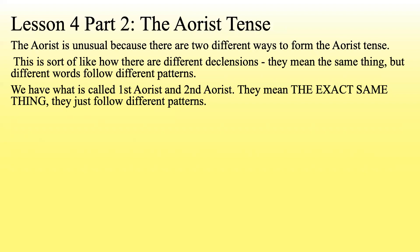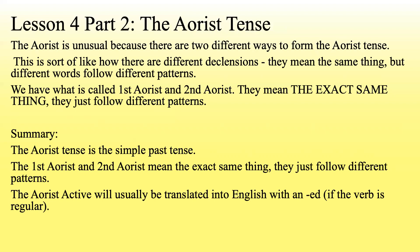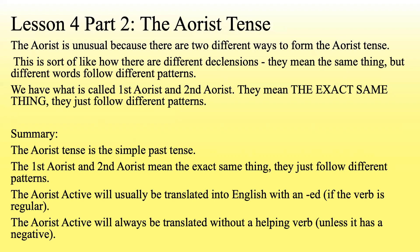Summary: The aorist tense is the simple past tense. The first aorist and second aorist mean the exact same thing — they just follow different patterns. The aorist active will usually be translated into English with "-ed" if the verb is regular. The aorist active will always be translated without a helping verb unless it is negative or a question.